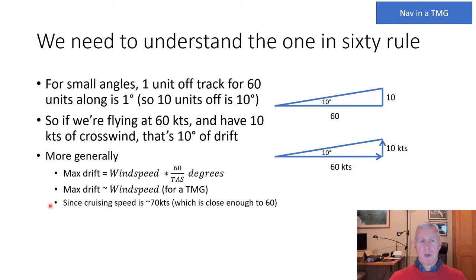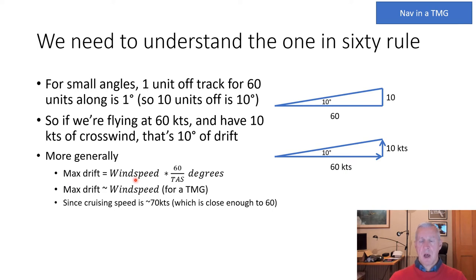More generally, the maximum drift of an airplane is the wind speed times 60 divided by true airspeed in degrees. In a TMG cruising close to 60 knots, maximum drift equals the wind speed — so a 10-knot wind gives a maximum of 10 degrees of drift.